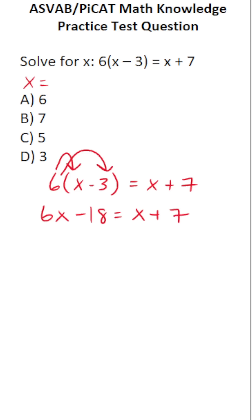The next thing I'm going to do is move this x to this side of the equation via subtraction. In doing so, this crosses out. 6x minus x is 5x minus 18 equals 7.